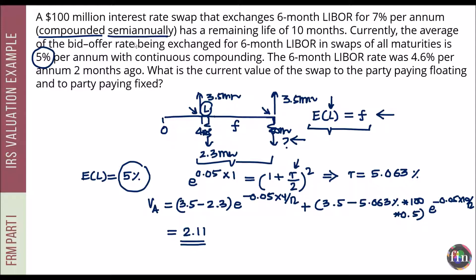If rates are given in continuous compounding, convert them to the correct compounding frequency before computing swap cash flows — otherwise the FRA method answer will not match the bond method. This compared the bond approach and the FRA approach, confirming we get the same answer of 2.11 million using both.